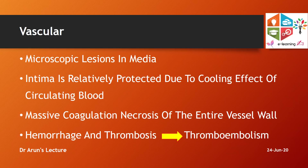Vascular structures show microscopic lesions in the vascular media. The intima is relatively protected due to the cooling effect of blood. In severe cases, the entire length of the vessel may show massive coagulation necrosis. Associated hemorrhages and thrombosis can lead to thromboembolism — a delayed cause of death in electrocution cases.